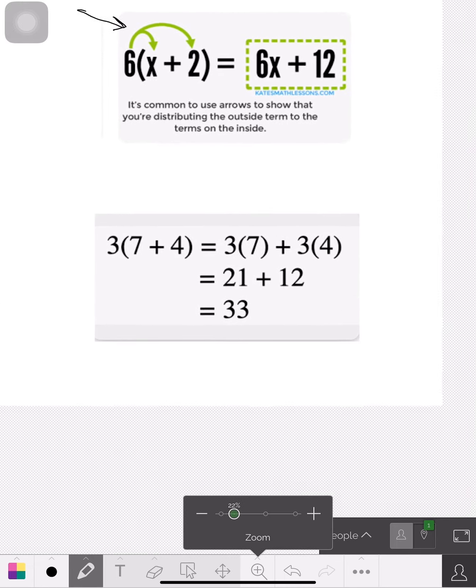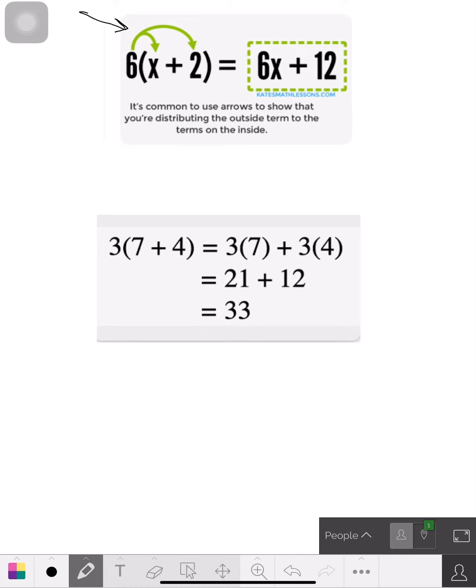Now, then below there I put one more example. So it's 3 brackets, 7 plus 4. So as you see, you carry it over: 3 times 7 plus 3 times 4. You bring that down. You get 21 plus 12. And the answer's 33.